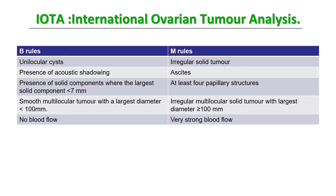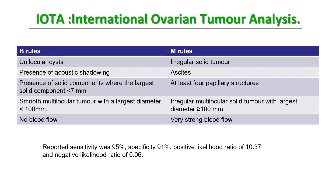The B-rules and M-rules: B stands for benign, M stands for malignant. Benign features include unilocular cysts, presence of acoustic shadowing, solid components where even the largest is less than 7 mm, smooth multilocular tumor with largest diameter less than 100 mm, and no blood flow on Doppler.